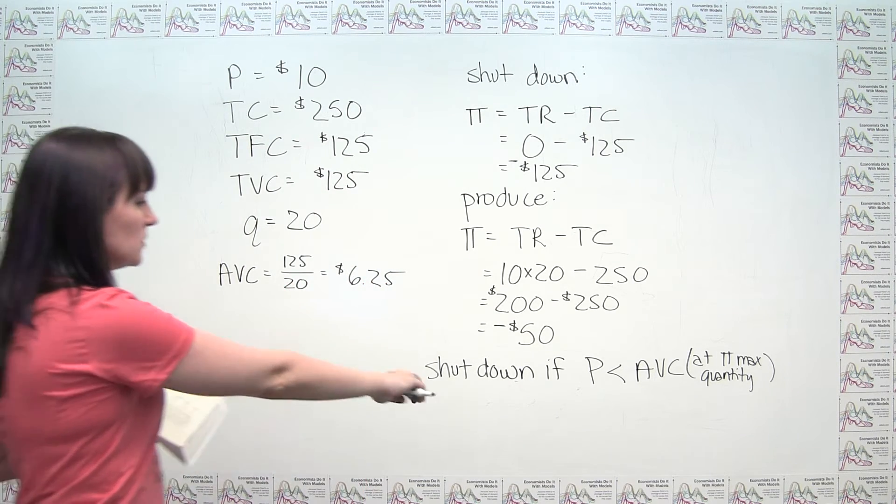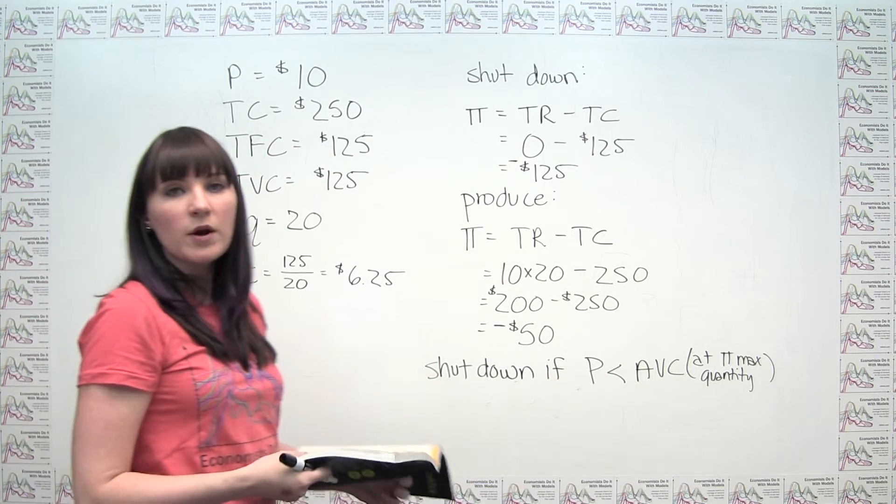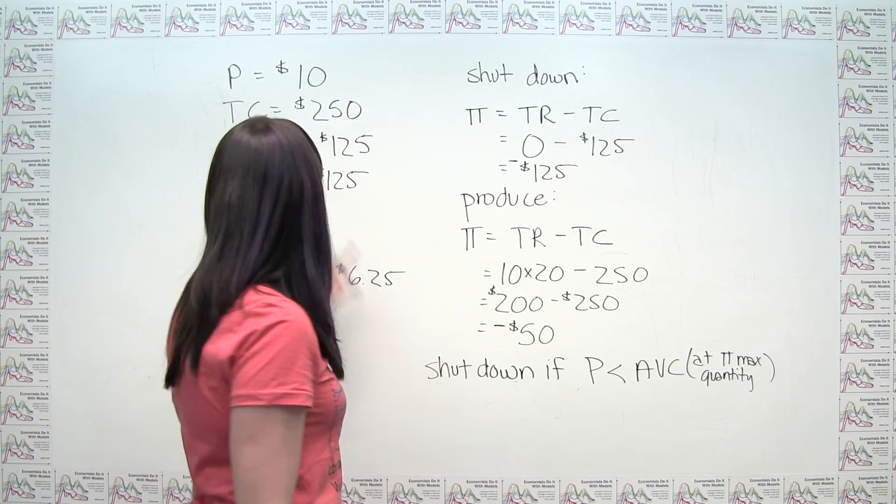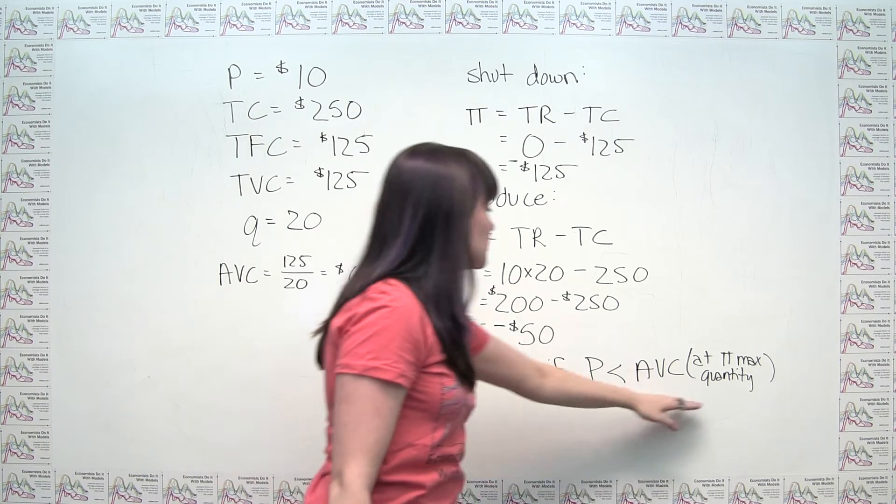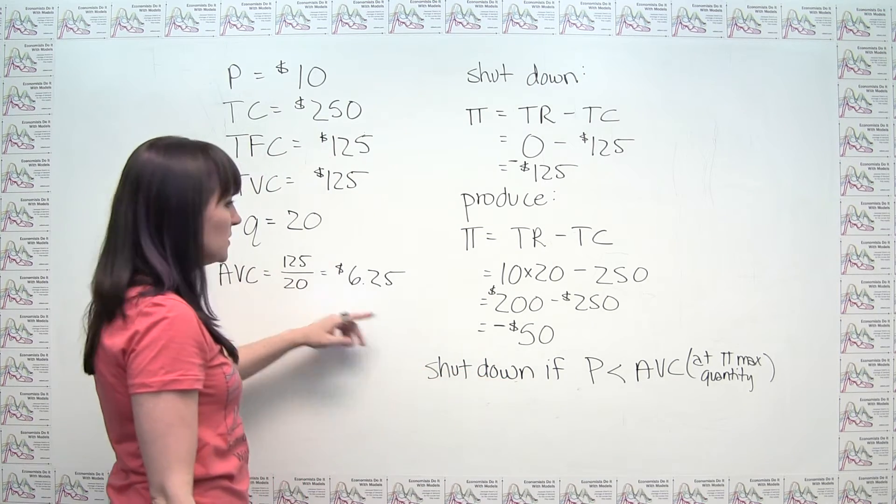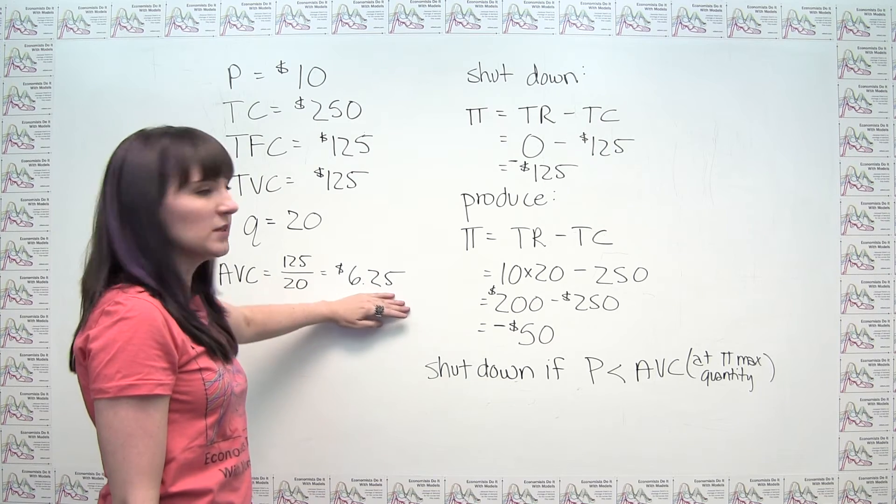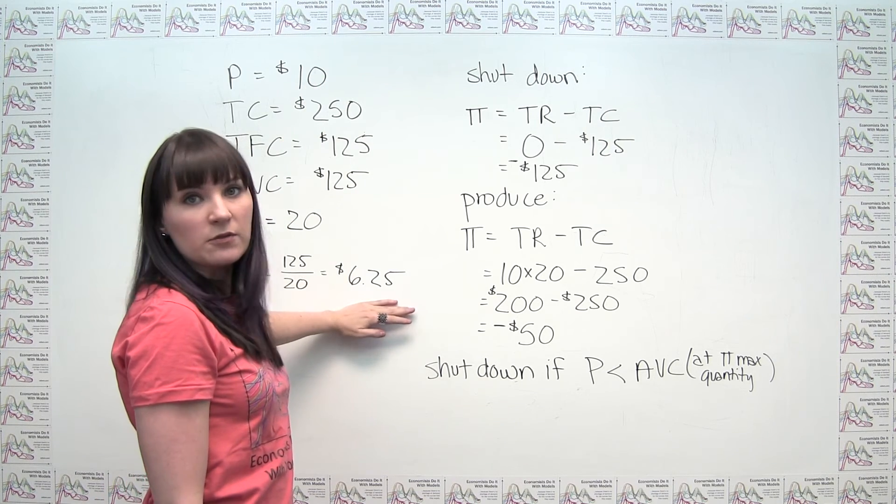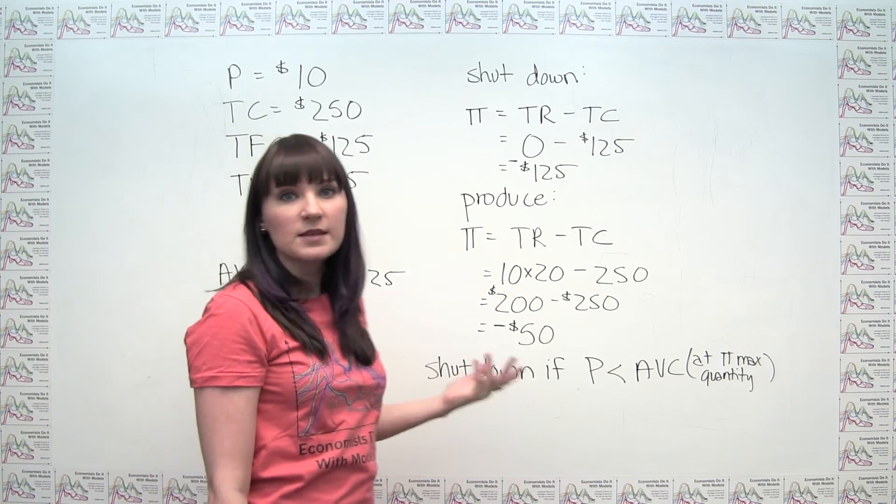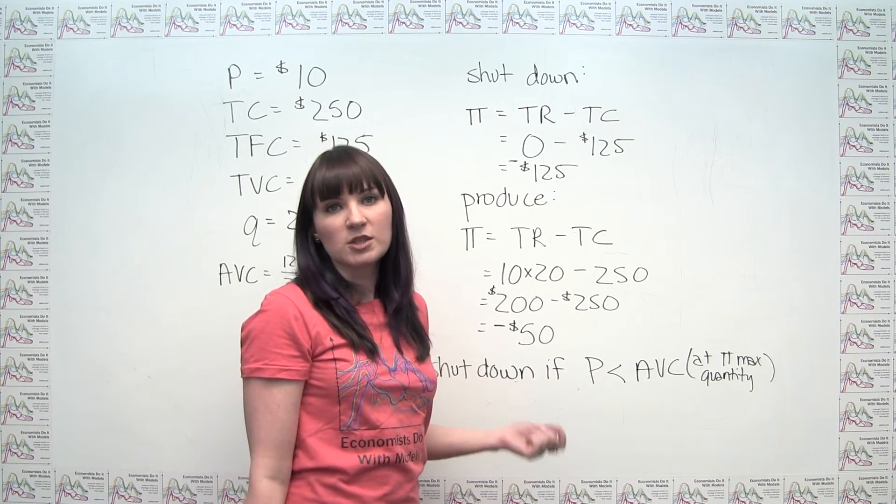So we can now use this formula directly and we can say, well, Barney would want to shut down if his price of $10 were less than his average variable cost at the profit maximizing quantity, which we calculated to be $6.25. $10 is not less than $6.25. So again, we've seen now directly using our rule, that Barney would not want to shut down in the short run.